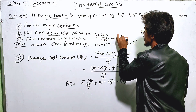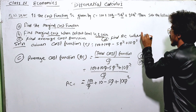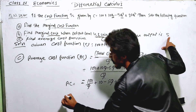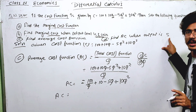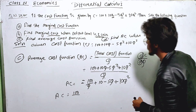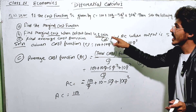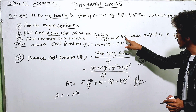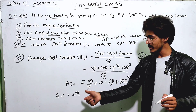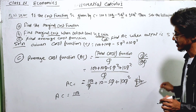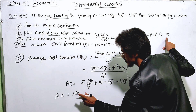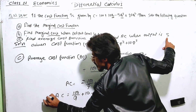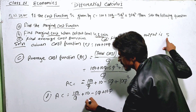The average cost function answer is confirmed. Now find AC when the output is 5 units. Substituting Q equal to 5 into the average cost function: AC equals 100 divided by 5 plus 10 minus 5 into 5 plus 10 into 5 squared. That gives 20 plus 10 minus 25 plus 250, which equals 255.